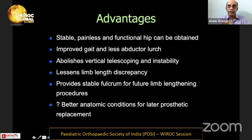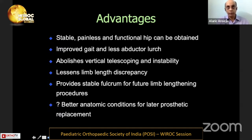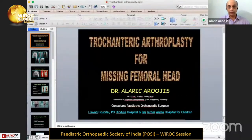The advantages of this procedure are that in the short to medium term, a fairly stable, painless, and functional hip can be obtained. Gait is improved with lessening of the abductor lurch; the severe instability and vertical telescoping are obliterated; limb length discrepancy is reduced; and a stable fulcrum is provided for future limb lengthening procedures. In select cases with the right criteria, this is a worthwhile procedure, and the younger child tends to benefit more than one closer to skeletal maturity.